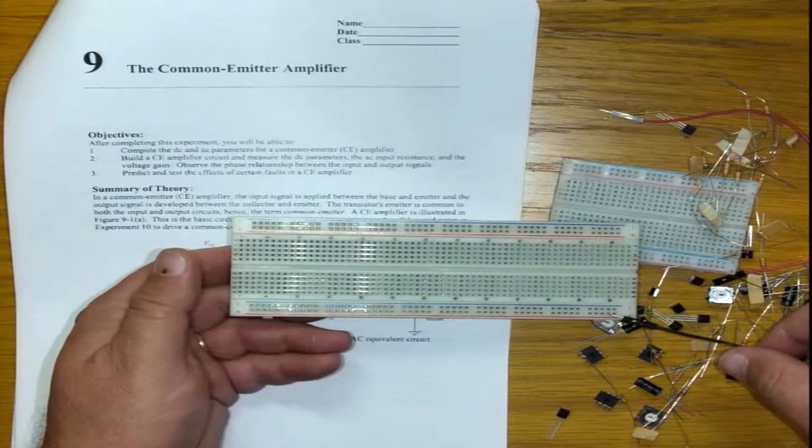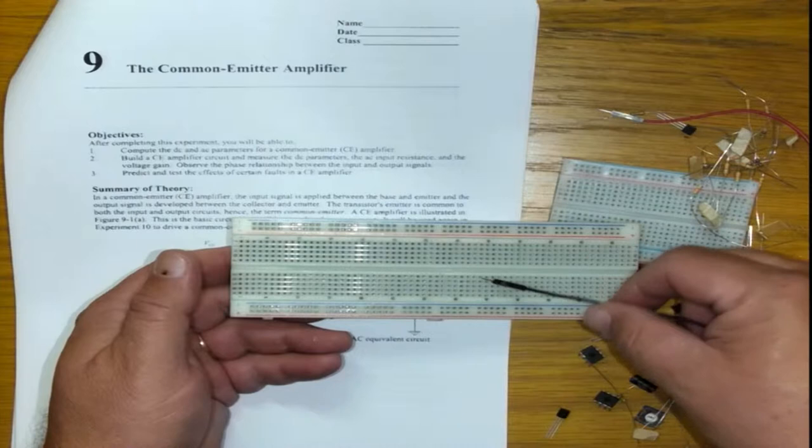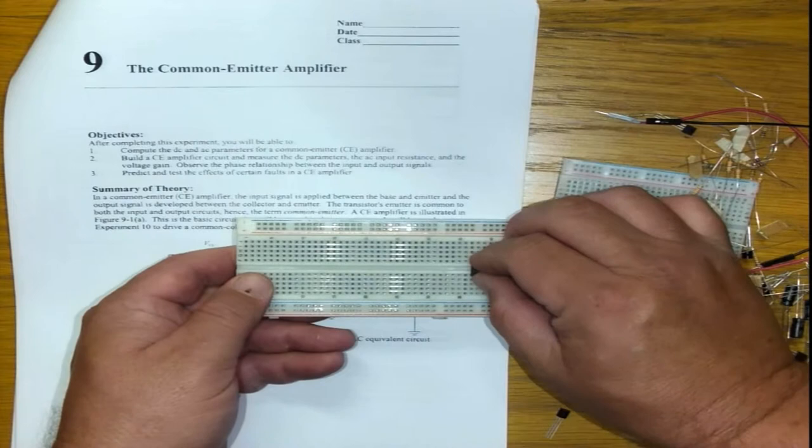The holes in the middle are five holes up and down, five holes up and down. So keep in mind that when we should use an integrated circuit, an IC or so, that's typically how we will place it.